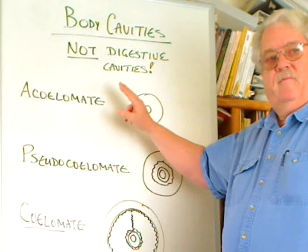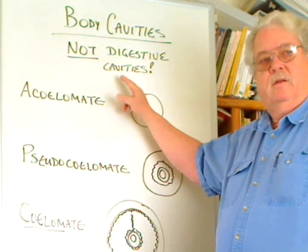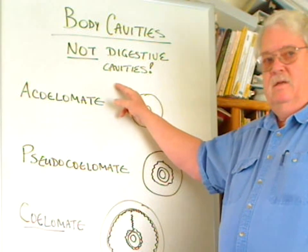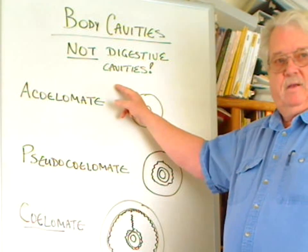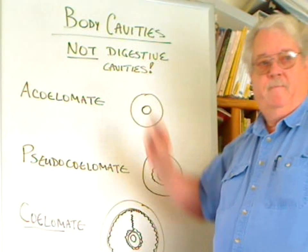To summarize: acelomate means without a body cavity; pseudocelomate means having an unlined or false body cavity; and coelomate means having a true lined body cavity. Again, these have nothing to do with digestive cavities — that's a very common mistake students make.